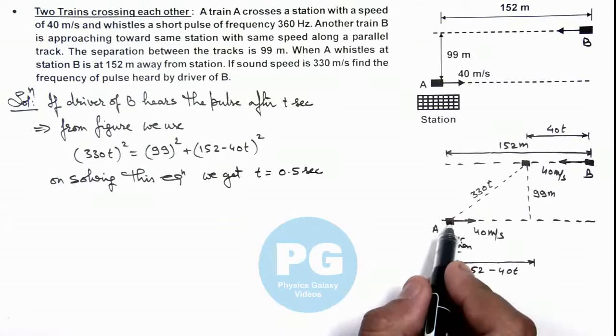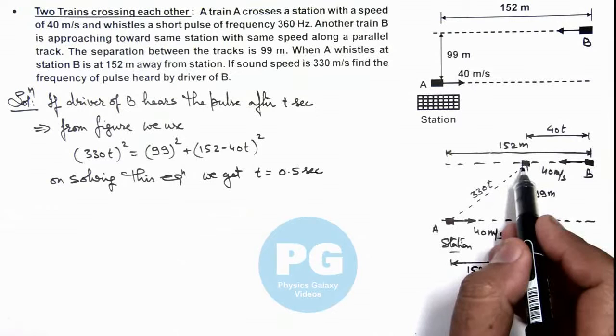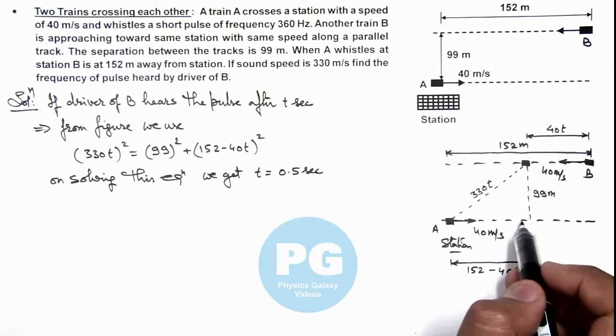That means after emission of pulse, in half a second B will reach somewhere where he'll receive the pulse. The driver of B will receive the pulse. At this instant A would be at some other location, but we are not interested in that.